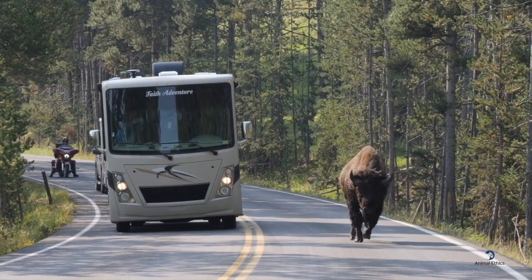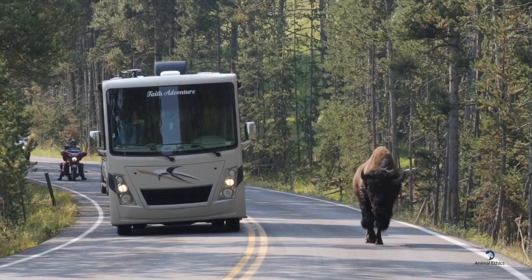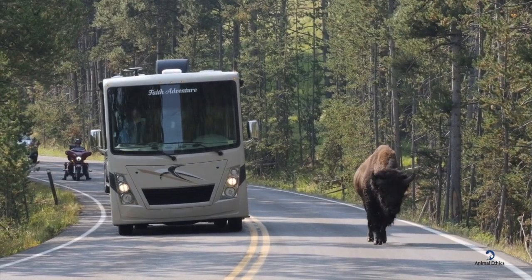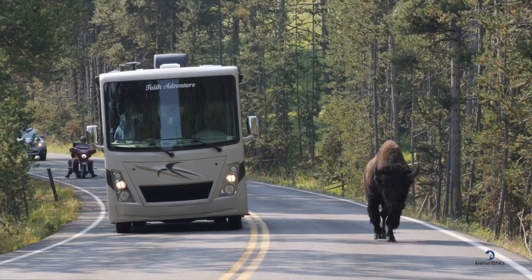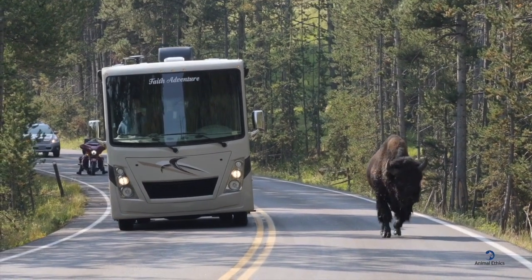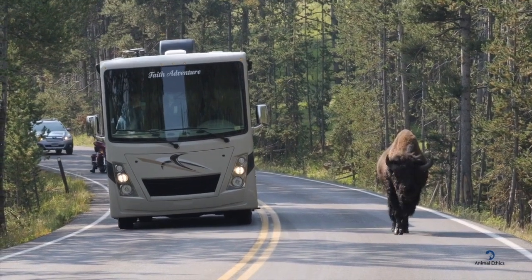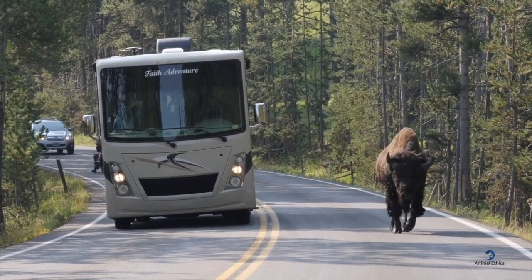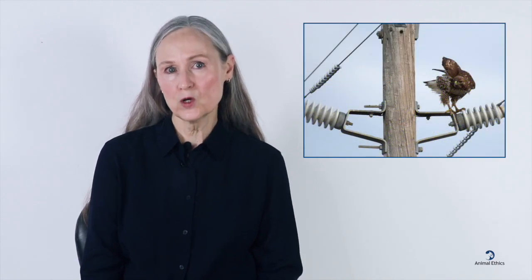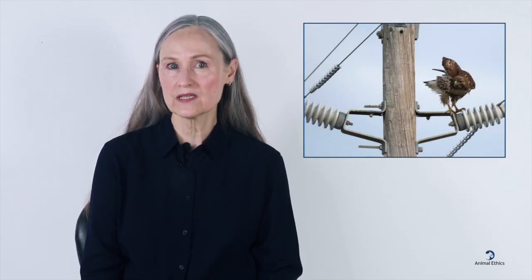Sometimes wild is understood to mean all areas that don't have significant human presence or activity, including forests managed by humans. But the term wild animal suffering is not meant to include only animals living in those places. Many animals that most people consider wild live outside direct human control in areas devoted to agriculture or animal farming. They can also be found in urban, suburban, and industrial areas.